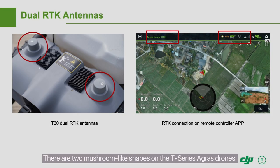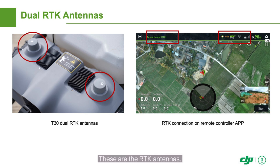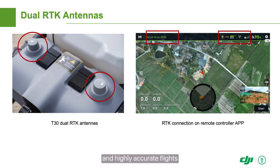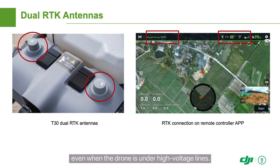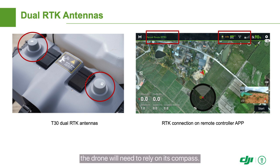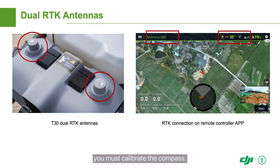You may have noticed the two mushroom-like shapes on the T-Series Agris drones. These are the RTK antennas. The two RTK antennas enable the orientation function and highly accurate flights. They also prevent electromagnetic interference even when the drone is under high voltage lines. Without the RTK orientation function, the drone will need to rely on its compass, so if the orientation function is disabled, you must calibrate the compass.